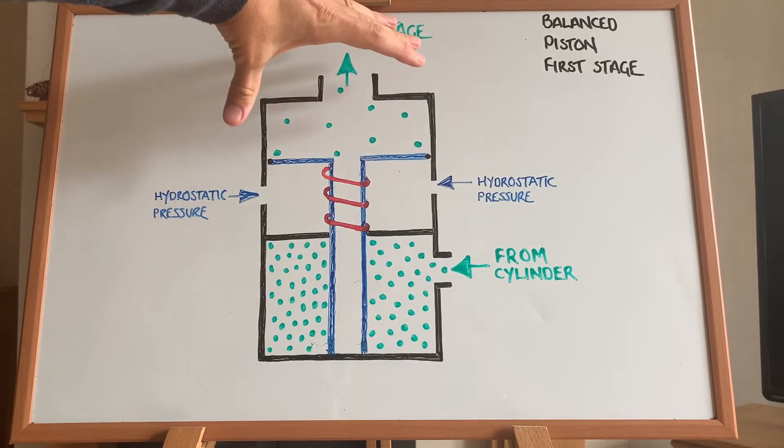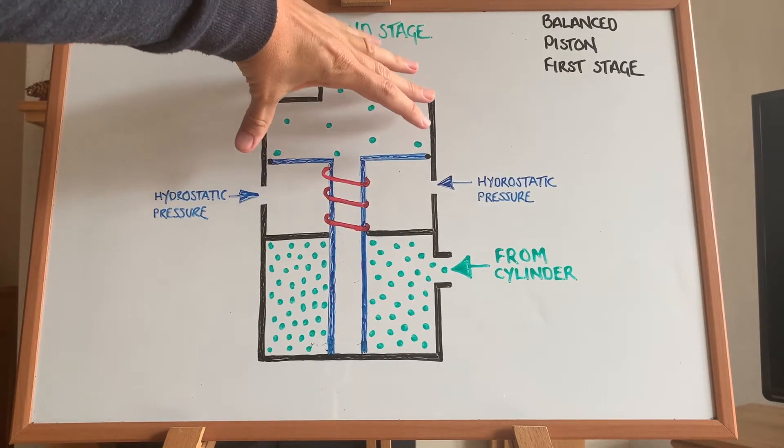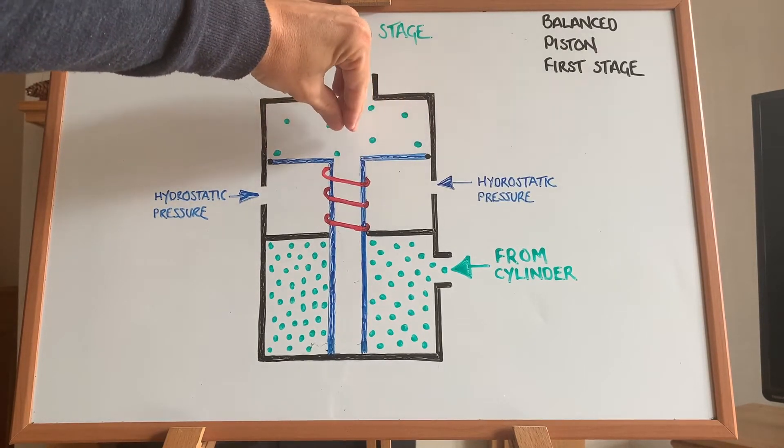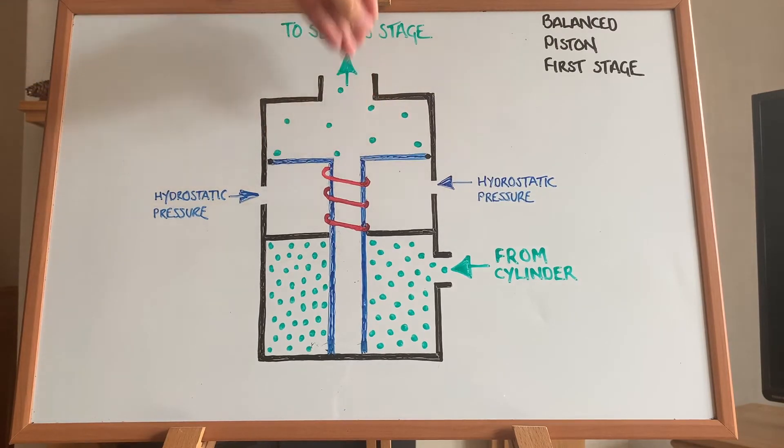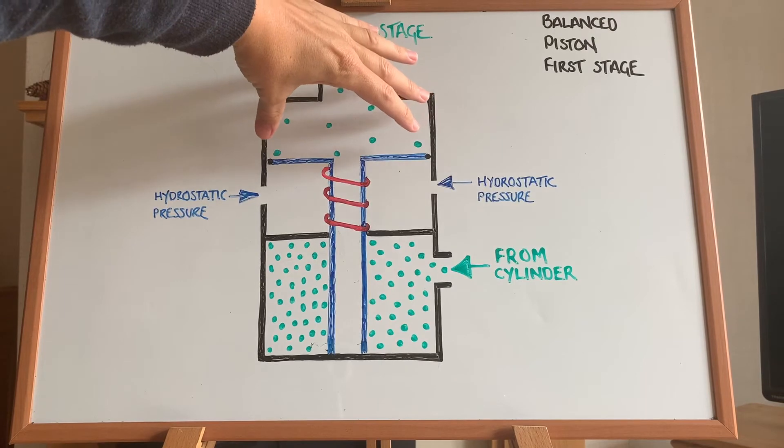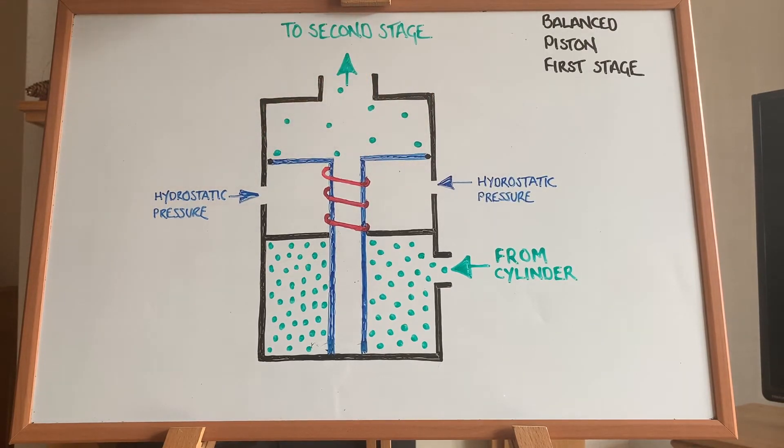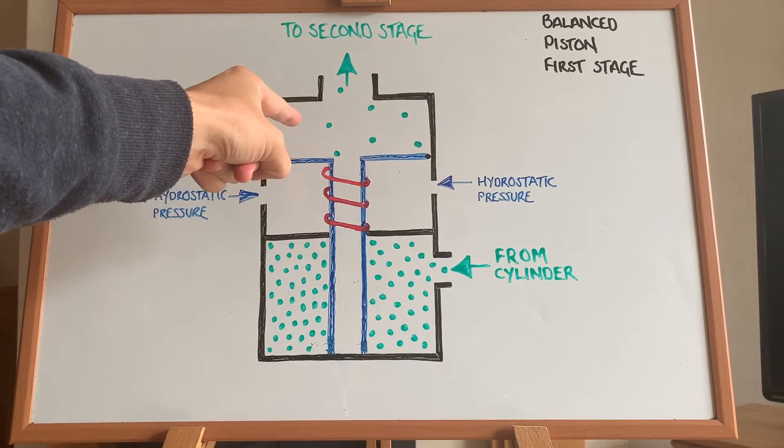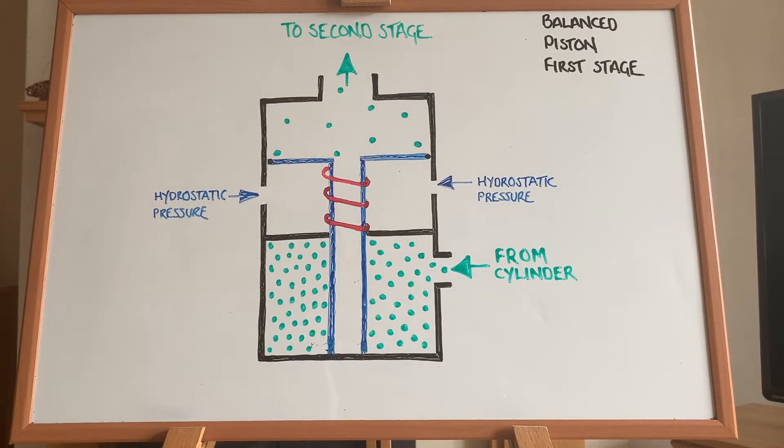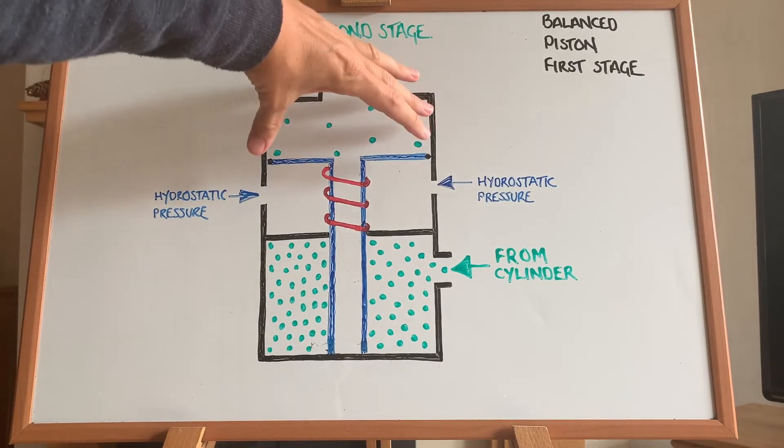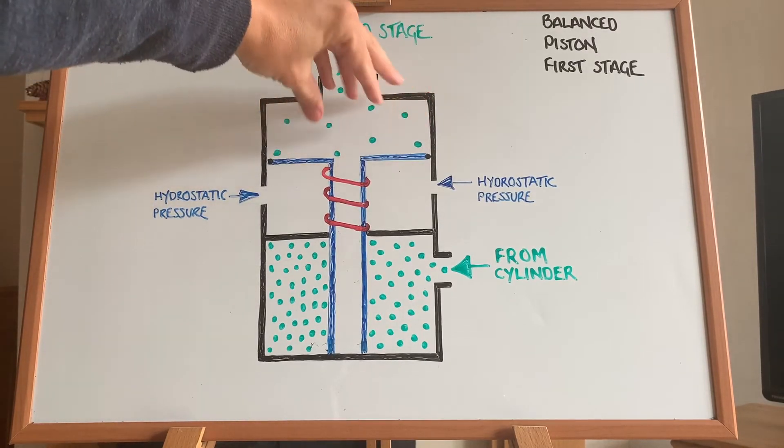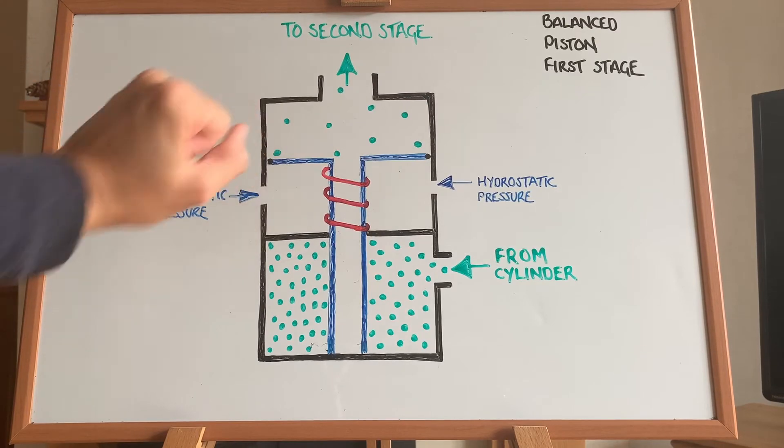So when the diver inhales, what they're doing is they are taking this intermediate gas out of this chamber and directing it towards them. So this intermediate pressure gas will be taken out and go towards the diver. What that means is the pressure inside this chamber is going to start to drop because the gas is leaving the chamber and going towards the diver.